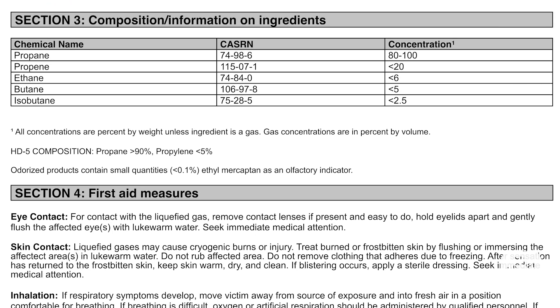Section 3: Composition/Information on Ingredients. This section lists what's in the product, including any impurities or additives. Here you see that propane makes up 80–100% of the product.